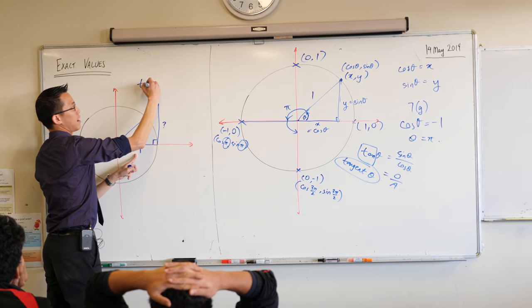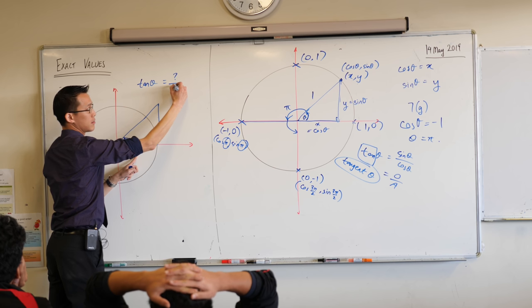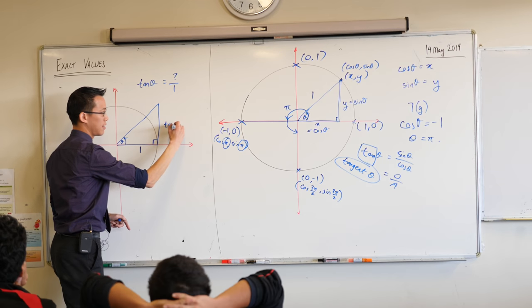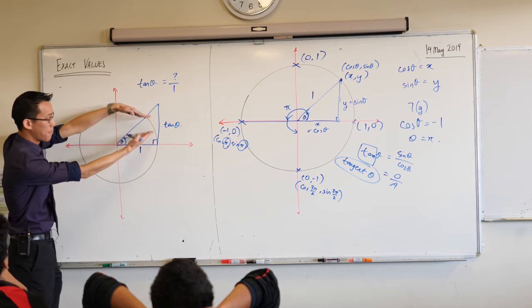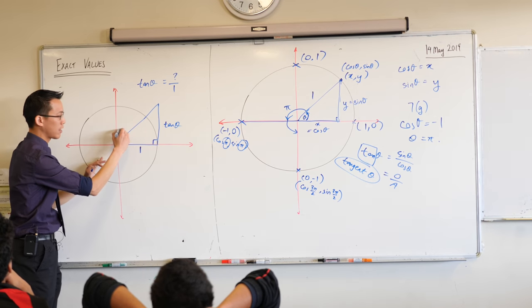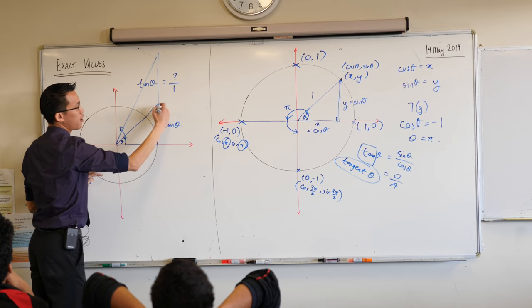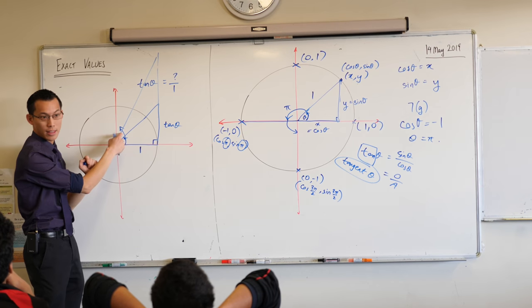So, tan theta equals opposite on adjacent. So, this side here is tan theta, this is the meaning, why is it called tan? It's the length of that part of the tangent formed by this angle. If you gave me a bigger angle, then this would extend up higher and you would go further along and your tangent would be longer, so your tan of this length is higher.